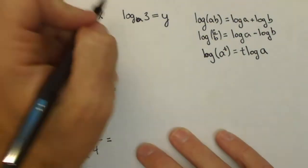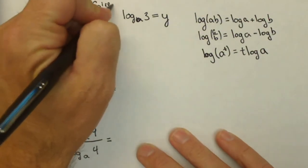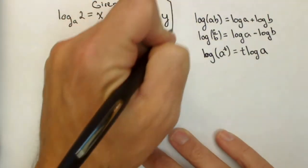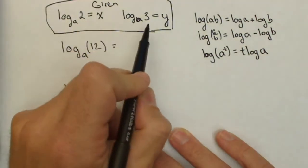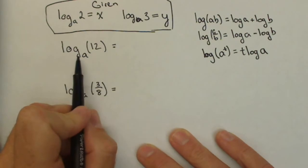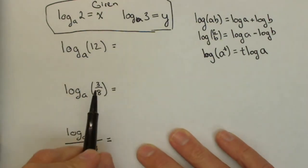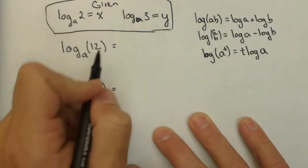So what we're given is that log base a of 2 equals x and log base a of 3 equals y. That means we want to rewrite these expressions in terms of log base a of 2 and log base a of 3.